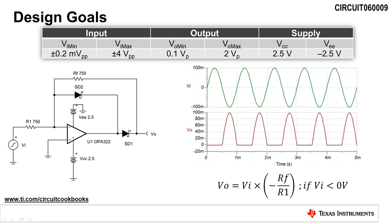The design goal of this circuit is to input a bipolar signal from plus minus 0.2 millivolts peak-to-peak to plus minus 4 volts peak-to-peak and convert it to a unipolar signal from 0.1 to 2 volts peak. It utilizes a dual plus minus 2.5 volt supply.